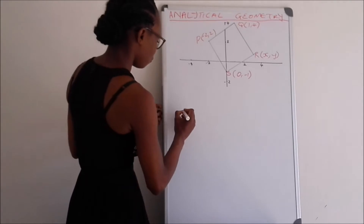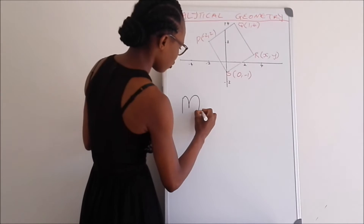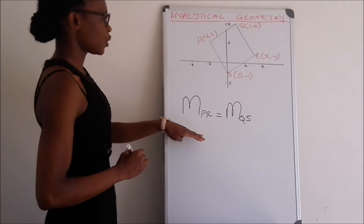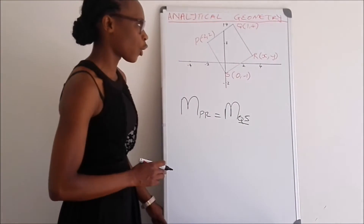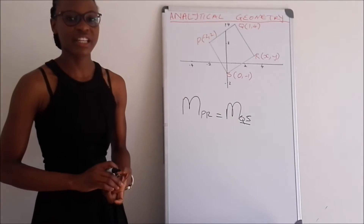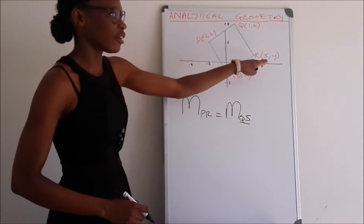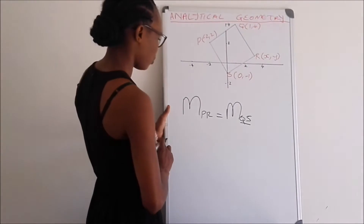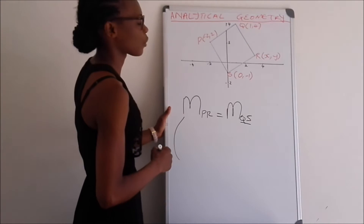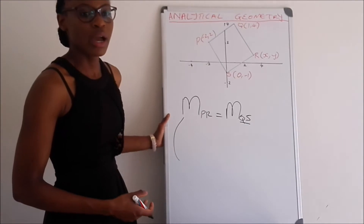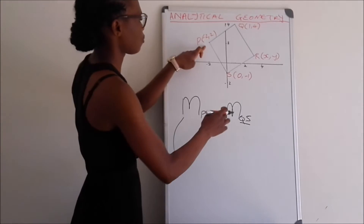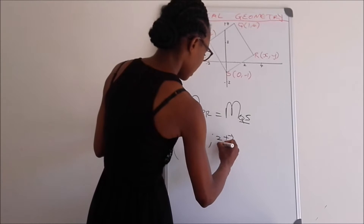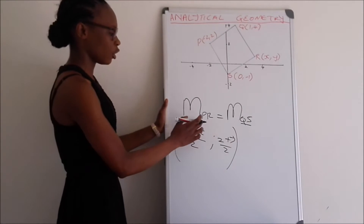What we need to do is find the midpoint. The midpoint of point PR equals the midpoint of point QS. For Q and S we have all the coordinates, so we can find their midpoint and then equate it to the midpoint of PR, which contains the unknowns for point R. The midpoint formula says: (x1 + x2)/2, (y1 + y2)/2. For PR that gives us: (−2 + x)/2 and (2 + y)/2.